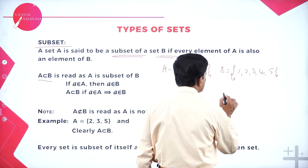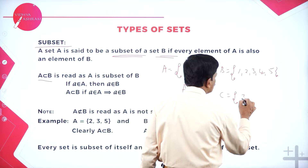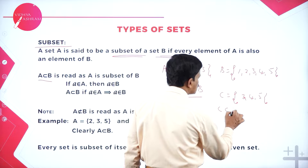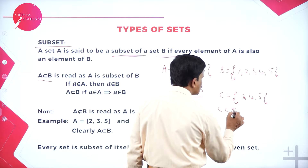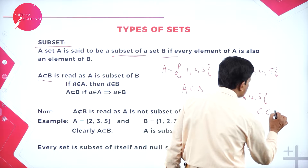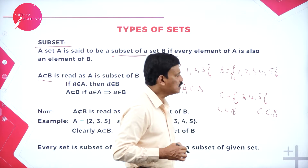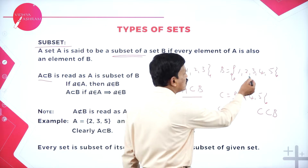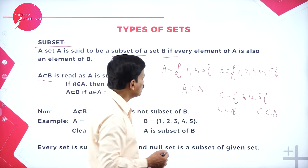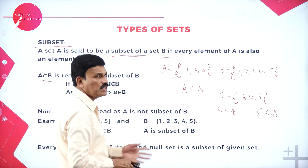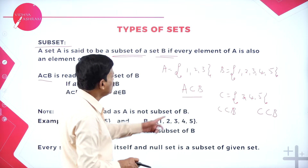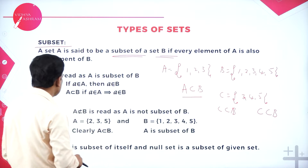If we take another example, C = {3, 4, 5}, then C is also a subset of B. All the elements of C are also elements of the set B. Therefore, C is the subset of B. So a set A is said to be a subset of B if all the elements of A are elements of B, denoted as A ⊆ B.